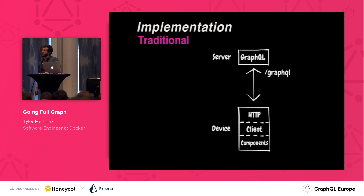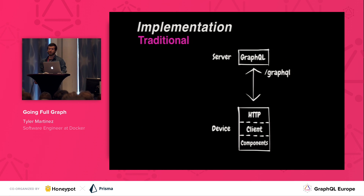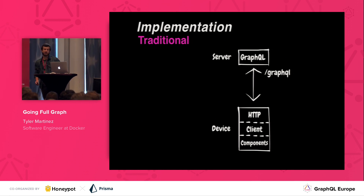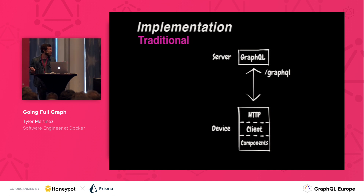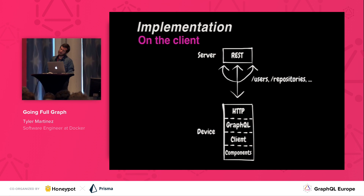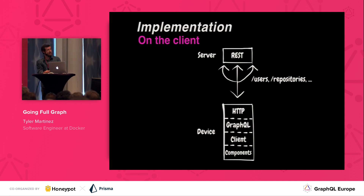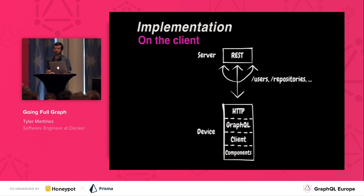In a traditional GraphQL implementation, we run GraphQL on a remote server. The client application sends queries over the network to our server, which processes the request and returns the data over the network. In our implementation, we instead run GraphQL in the client application running on the end-user's device. Instead of queries being serialized and sent over the network, they are passed as JavaScript values directly to an executable schema.